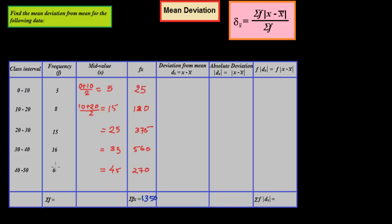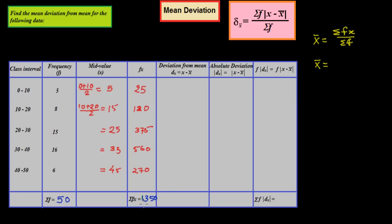The formula for mean in grouped data is x̄ = summation of fx over summation of f. So x̄ = 1350 divided by 50, which gives us 27. So the mean x̄ is 27.